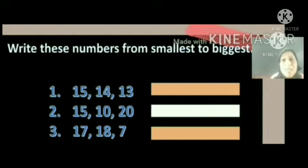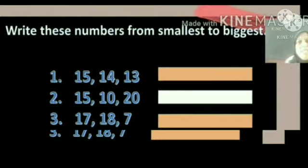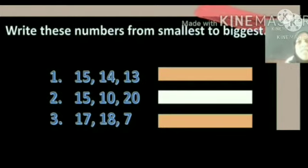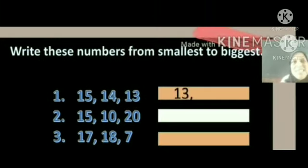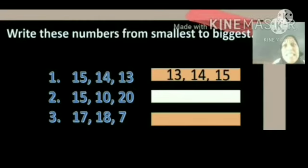For arranging numbers from smallest to biggest, you should have the idea about counting forward. The first question is: 15, 14, 13. Arrange these from smallest to biggest. Which number comes first? That is 13. Second place is the number 14.